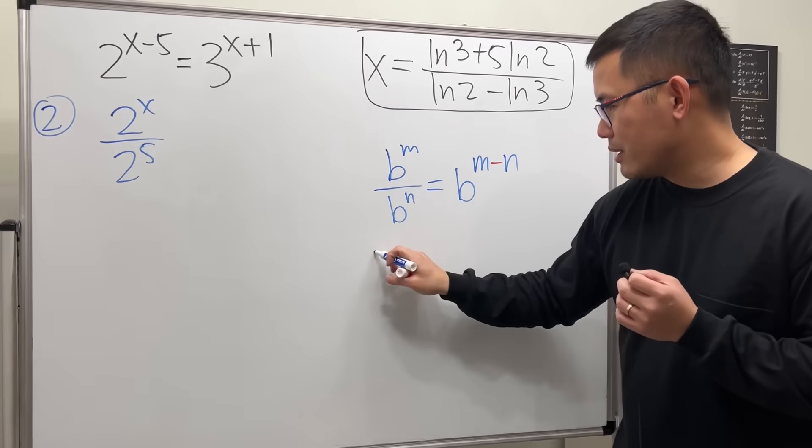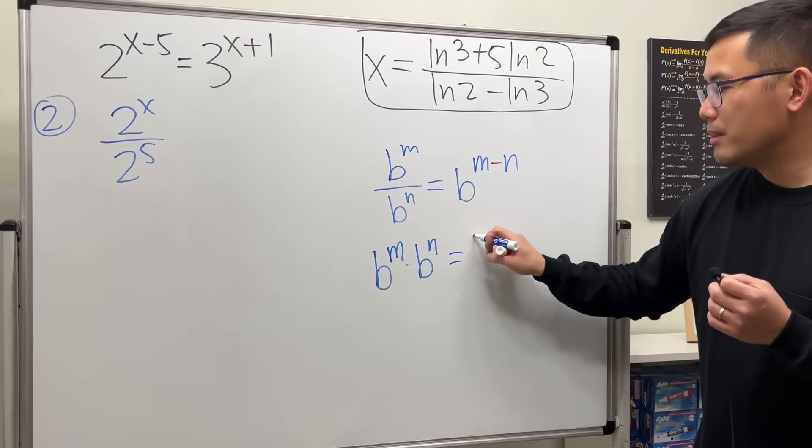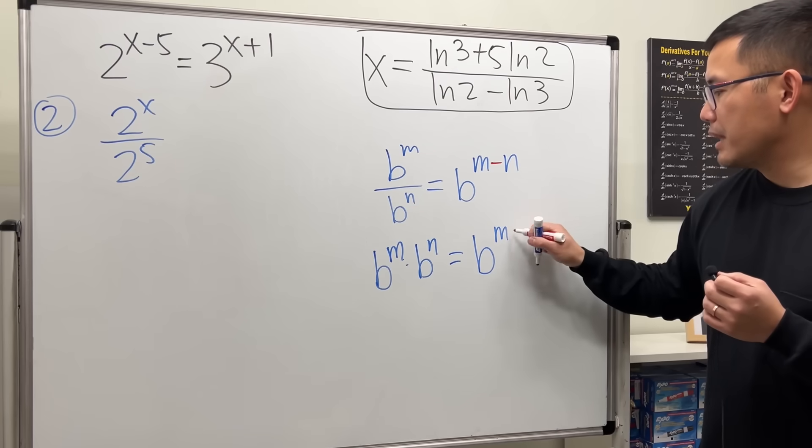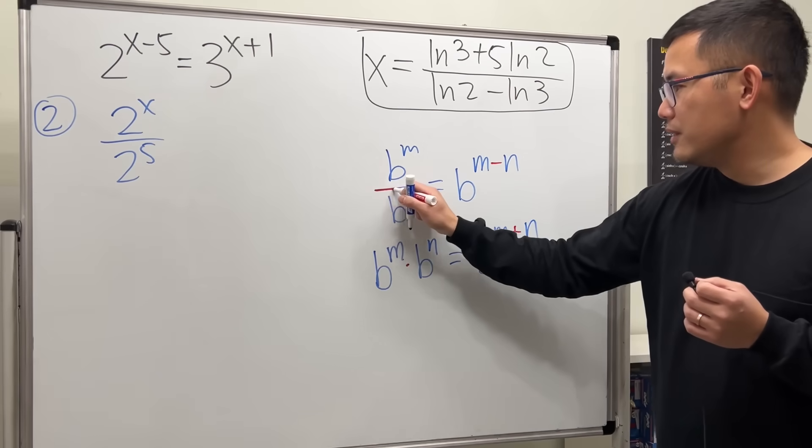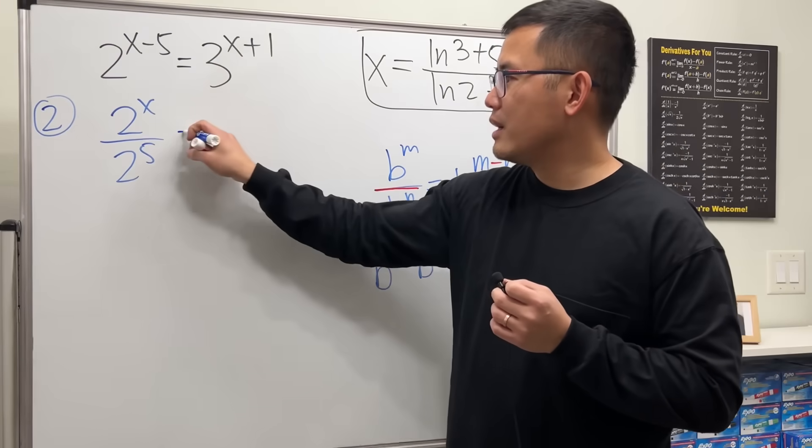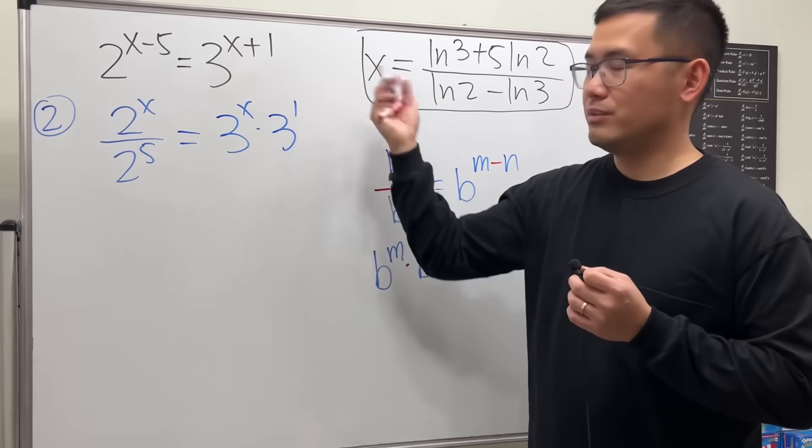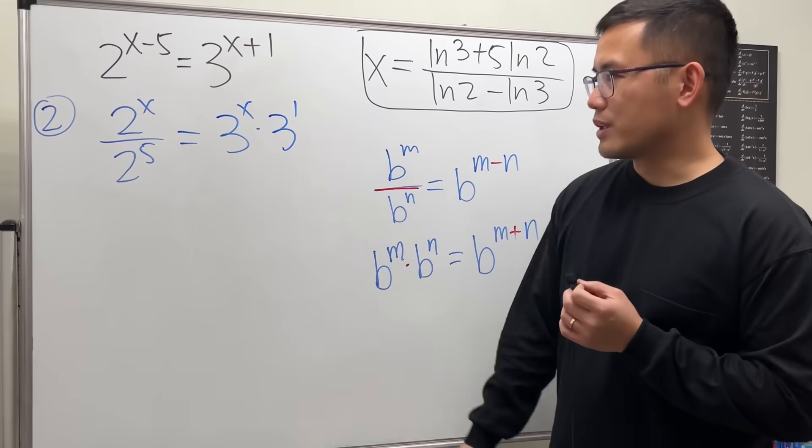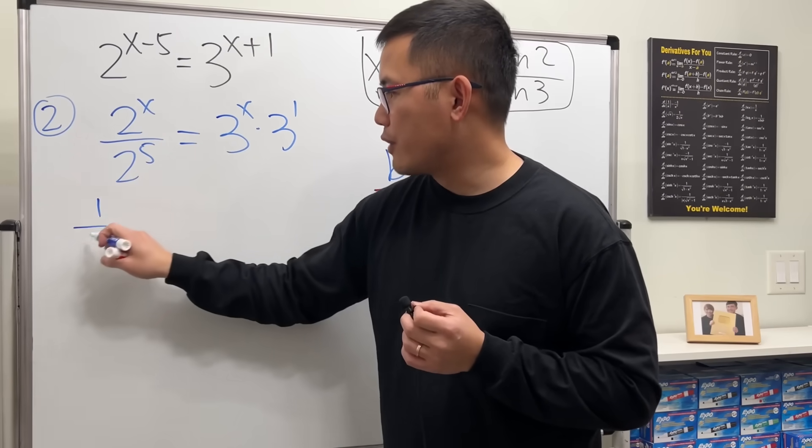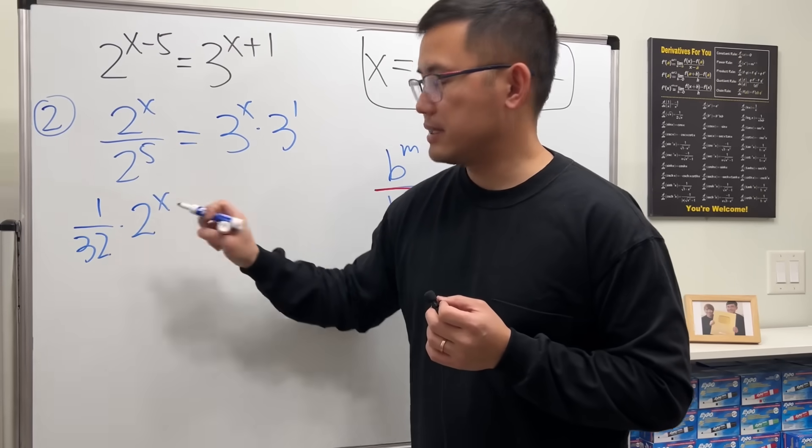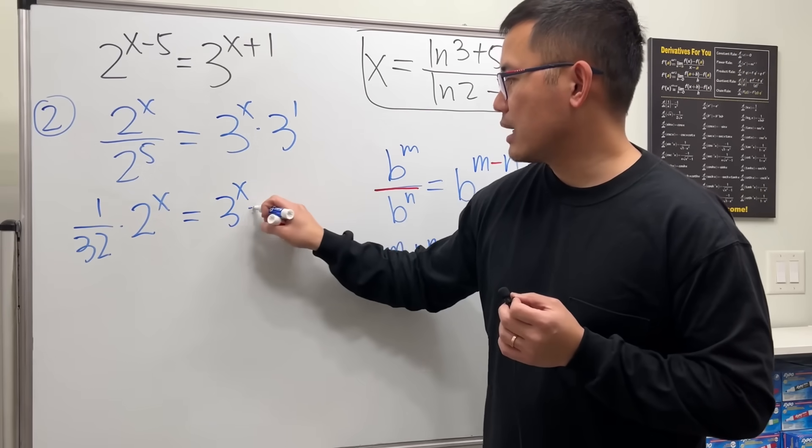Now for the addition here, remember, b to the m times b to the n gives you b to the m plus n. When it's a multiplication, we add. Division, subtract. So here, we can look at this as 3 to the x times 3 to the 1st. Just like that. Now, let's work this out. 2 to the 5 is just 32. And write it down as 1 over 32 times 2 to the x. And then right here, I would like to just write it down as 3 to the x times 3.